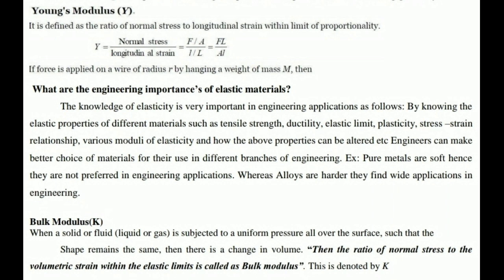Using all this knowledge, an engineer can build or design something. For example, if we use pure metal, which is very soft and has more elasticity compared to plasticity, the strength of that material will be compromised. If we use alloys, the material will be very hard and can be used in different applications. We must understand the elastic property of the material; once you understand it, you can fully utilize the material's properties.